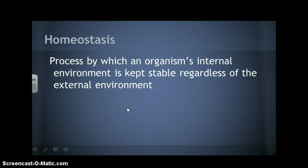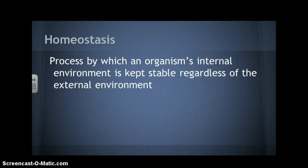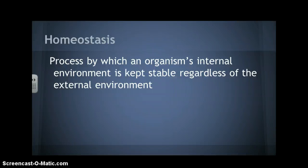Another important word you need to know is homeostasis, and this will come up a lot as we talk about the different body systems. Homeostasis is the process by which an organism's internal environment is kept stable, regardless of the external environment. For example, it's the way that we maintain a stable body temperature, and the way organ systems work together to ensure that stability. We'll talk about homeostasis more as we cover each organ system.